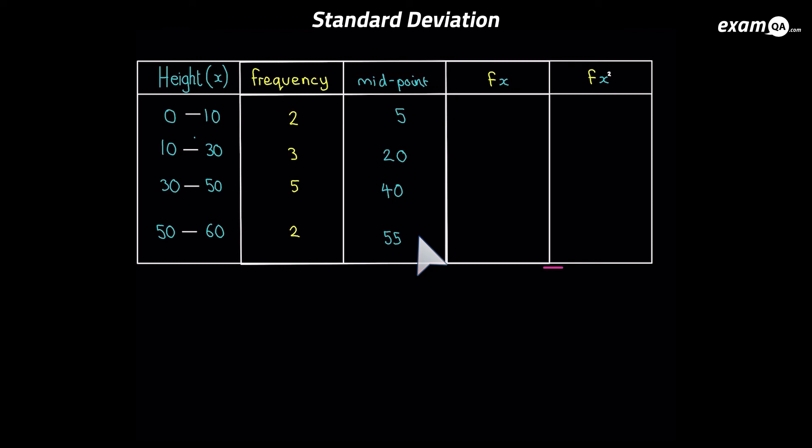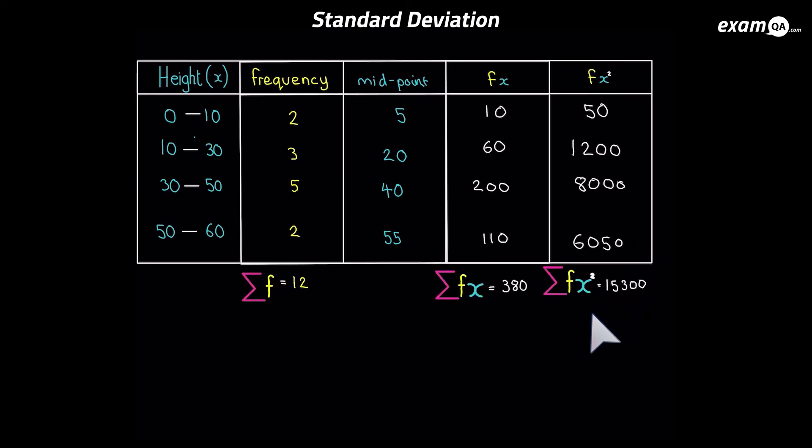Now we'll just do what we did last time. The x column is the midpoint column by the way. So we'll fill in the fx column. The f is 2, the x is 5. So 2 times 5 is 10. And we can do that for all of them. And we'll fill in the fx squared column. It will be f which is 2, times 5 squared this time. And we can do that for all of them as well. Now we need to sum up some of these columns. It looks like we've got everything we need for the formula now. So here's the formula again. Let's go ahead and fill it in. And this you'll put into your calculator. And we'll get 16.5.